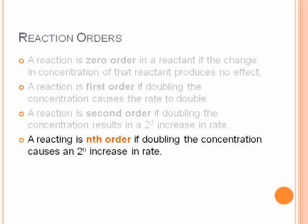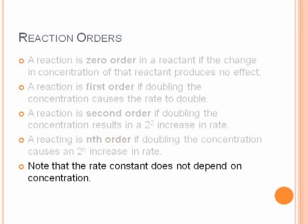And so nth order if doubling the concentration causes a 2 raised to the n power increase in the rate. It's going to be whatever factor you increase the concentration raised to the n power, where that n is your reaction order. Note that the rate constant is independent of the concentration.